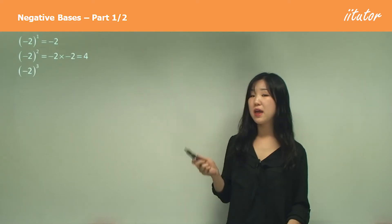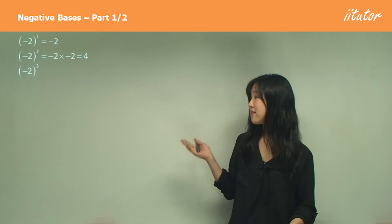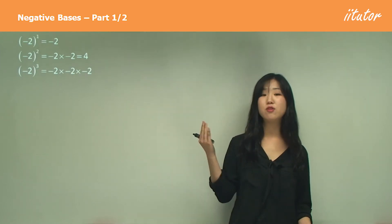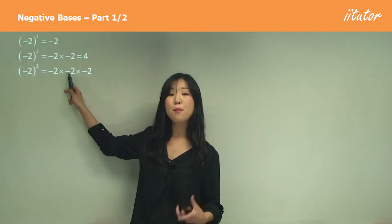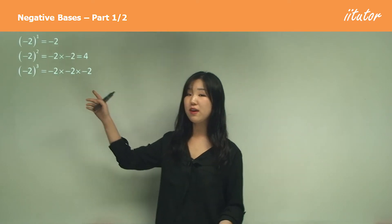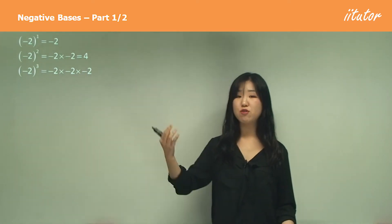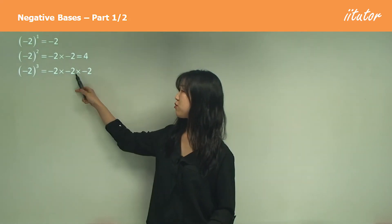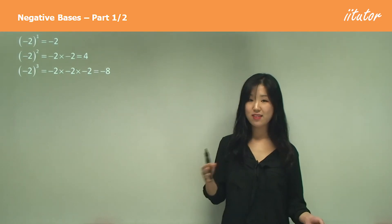Now let's try another one. Negative 2 to the power of 3, so negative 2 cubed. This is the same as negative 2 times negative 2 times negative 2. Now negative negative is a positive, and that means positive negative is a negative. So 3 negatives will eventually become a negative. And 2 times 2 times 2 is 8, so the answer is negative 8.